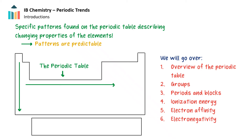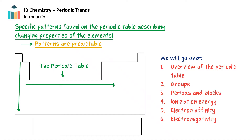Welcome to this key concepts video on periodic trends. Periodic trends are the specific patterns we find on the periodic table — patterns which describe changing properties of the chemical elements. Using the table, we can predict how certain properties change down a group or across a period.